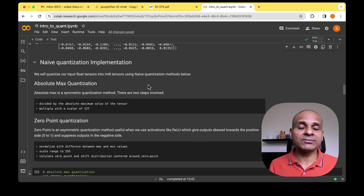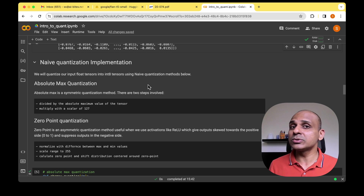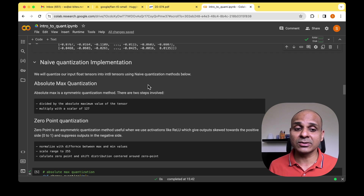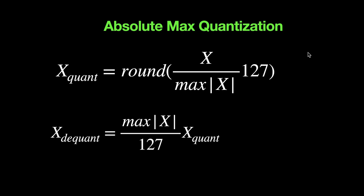Next we move on to a naive implementation of quantization. We'll consider two methods: absolute max quantization and zero point quantization. Absolute max quantization involves dividing the input x by the absolute max of the input value, then scaling it up to 127, rounding the result, and arriving at the quantized input.